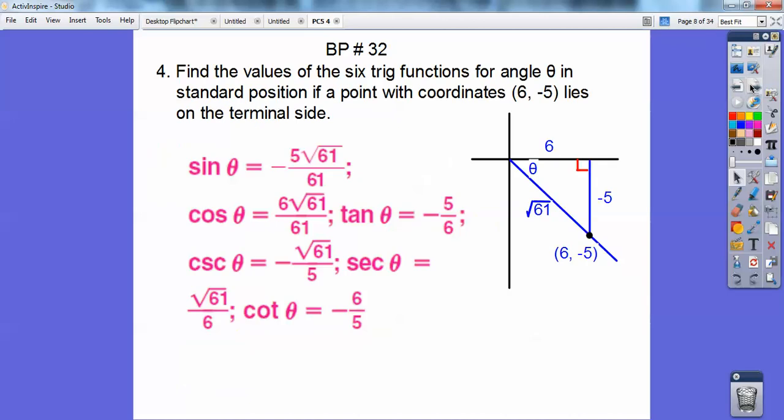Okay, and then find the values of the six trig functions with the angle at 6, negative 5. So over 6 down 5, so use the Pythagorean theorem right there. You find out this is the square root of 61, because 36 squared plus 25 squared equals x squared, so x is equal to the square root of 61 right there. So then I can do my sine is opposite over hypotenuse, cosine is adjacent over hypotenuse, and there's the tangents right there. My six trig figures right there.